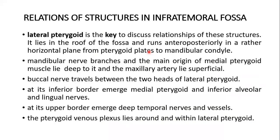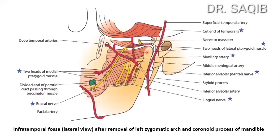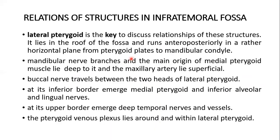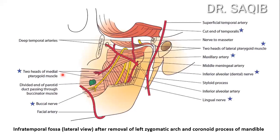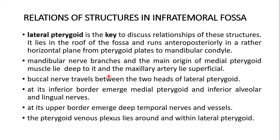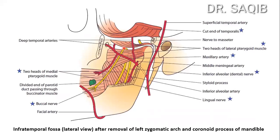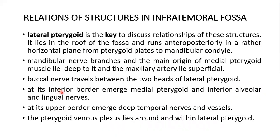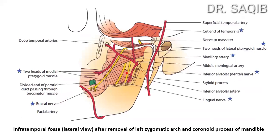The mandibular nerve branches and the main origin of the medial pterygoid muscle lie deep to the lateral pterygoid, while the maxillary artery lies superficial to it. The buccal nerve travels between the two heads of the lateral pterygoid. At its inferior border, the medial pterygoid, the inferior alveolar nerve, and the lingual nerve emerge.